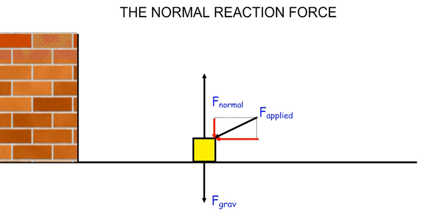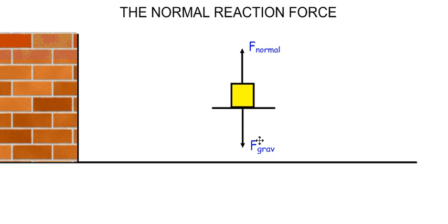So, in summary, although the normal force is typically equal to the gravitational force, it is not always the case. Under the action of an applied force, the normal force will change because it is a reaction force. Remember also that whereas the gravitational force acts vertically downwards, the normal force does not always act vertically upwards — it always acts perpendicularly away from the surface in contact.